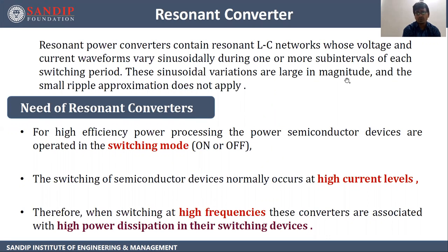What are resonant converters? Resonant power converters contain resonant LC networks whose voltage and current waveforms vary sinusoidally during one or more sub-intervals of each switching period. These sinusoidal variations are large in magnitude and the small ripple approximation does not apply.